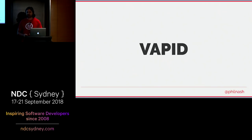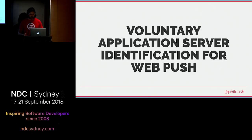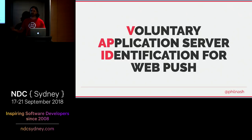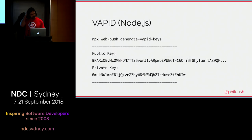One thing that's a little complicated about this is VAPID — Voluntary Application Server Identification for Web Push. It identifies your server and service to the push services so that if there's abuse, or if your service is overusing the push service, they can get in touch with you and work it out rather than just cut you off. VAPID requires you to generate public and private keys. In Node, I'd use the Web Push NPM package, which has a command line tool to generate VAPID keys.